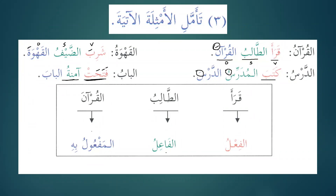Qara'a al-talibu — al-talibu is the fa'il — wal-Qur'anu al-maf'ool bihi. Qara'a is the verb, al-talibu is the subject, and al-Qur'an is the maf'ool bihi — the direct object. Please remember this is called the direct object — al-maf'ool bihi, i.e., direct object — and inshallah we will learn about the different forms of the object.